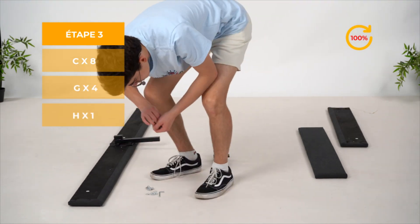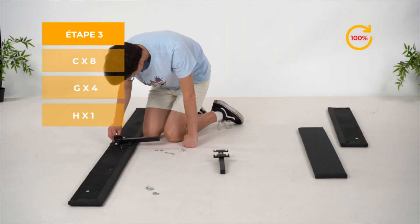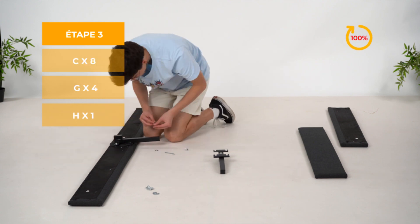Placez côte à côte les pieds de la pièce numéro 1. Placez la pièce numéro 3 sur l'endroit indiqué puis vissez à 100%.